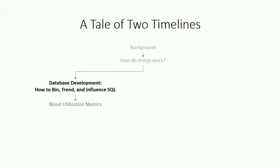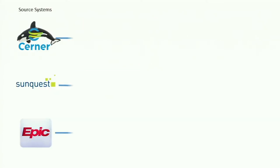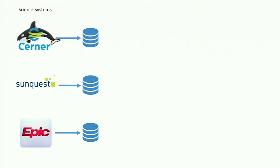This is the first branch, Act One, which I call database development: how to bin, trend, and influence SQL. All of the interactions of the clinicians, the patients, the nurses, and lab staff are recorded by each of the different source systems in their respective databases. Your ability to get data from the EMR and LIS are affected by how these database systems are set up.